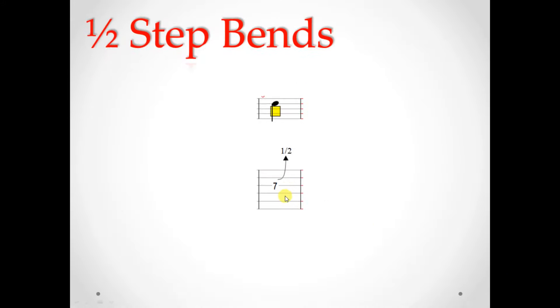First up, we have a half-step bend. Basically all we're doing is we're playing this note and we're going to bend it up one half step so it would match the pitch of the next fret up. Here's an example.